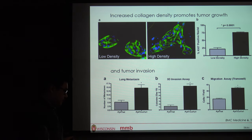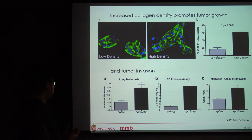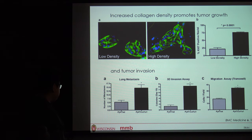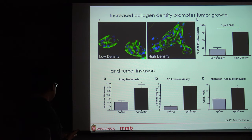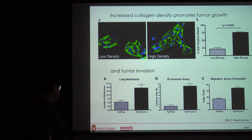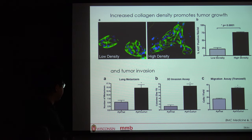There has been a lot of work in the literature demonstrating that increased collagen density promotes tumor growth and tumor invasion. Looking at some data here — examining the growth of MDA-MB-231 cells in a mouse model from the Keely lab — they demonstrate higher proliferation in the higher-density case. When we look at invasiveness, higher density typically facilitates more invasion into surrounding tissue. This holds across in vivo, in vitro 3D, and in vitro 2D assays, all demonstrating more invasive phenotypes at higher collagen densities.